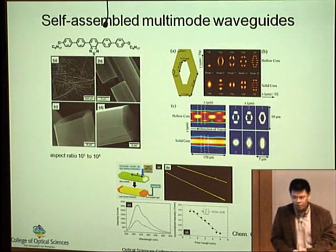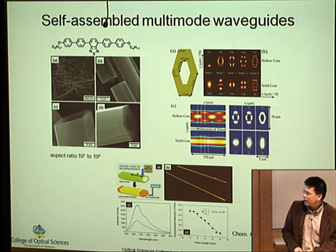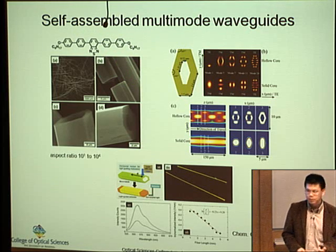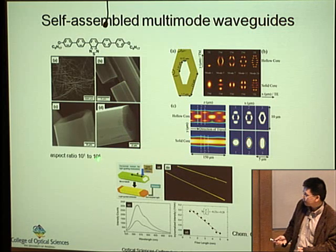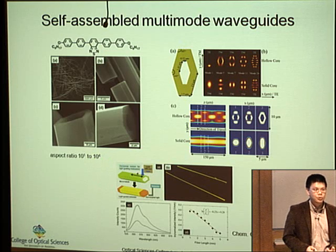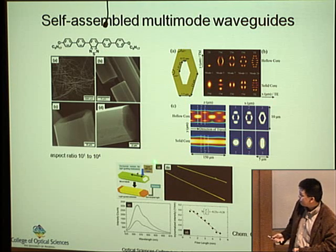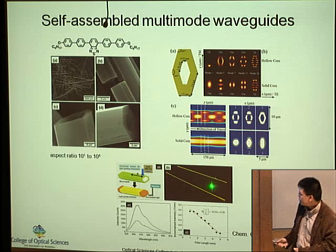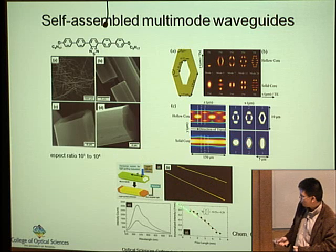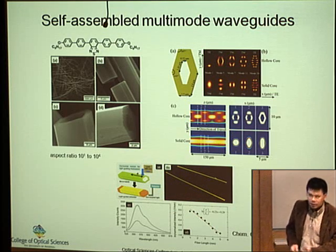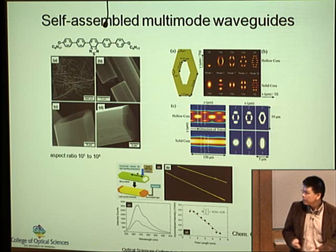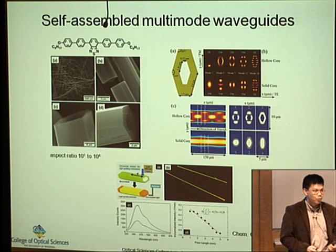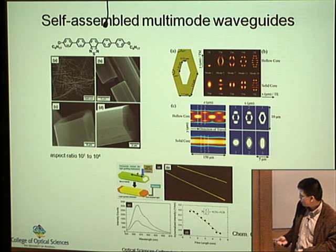We also discovered by accident that this molecule has a very unique self-assembly property. When placed in a tube, it forms very long, high-aspect-ratio single crystal structures on the order of 10^4 to 10^1 in aspect ratio. These structures also emit polarized light and form long waveguide structures. We did a bunch of study and simulations and found they form hexagonal tube structures with interesting multi-mode waveguiding behavior. This was recently published.